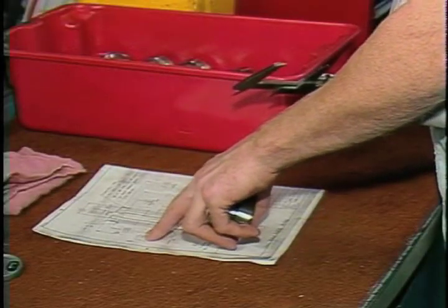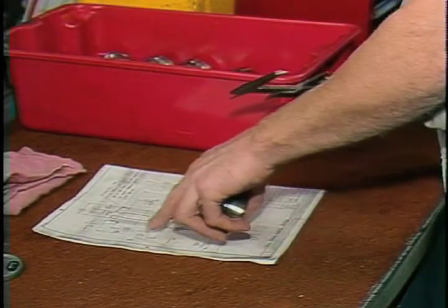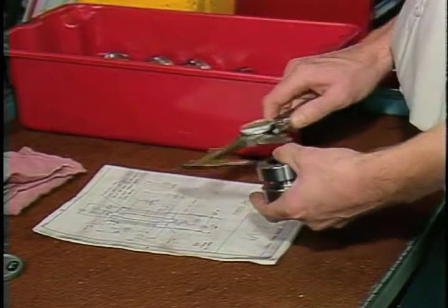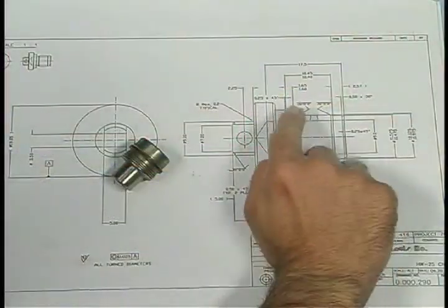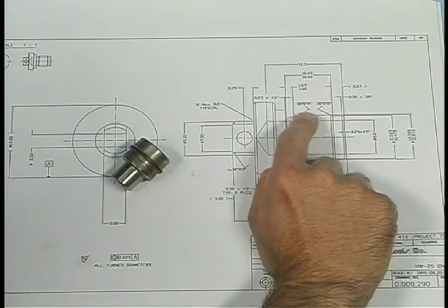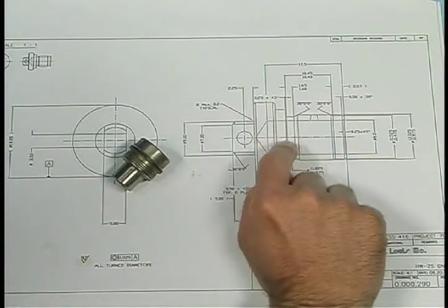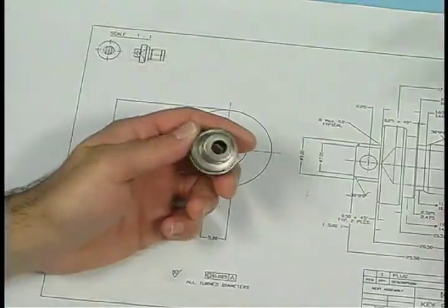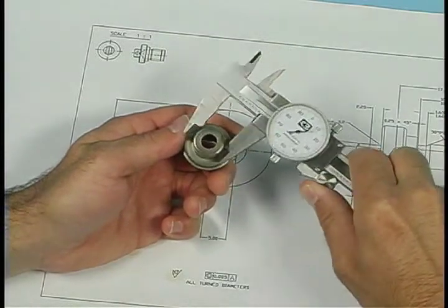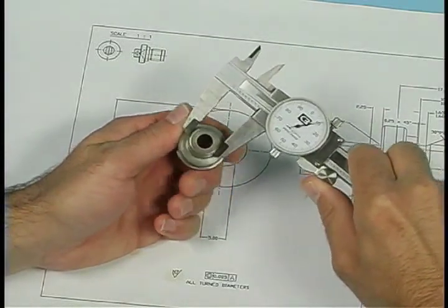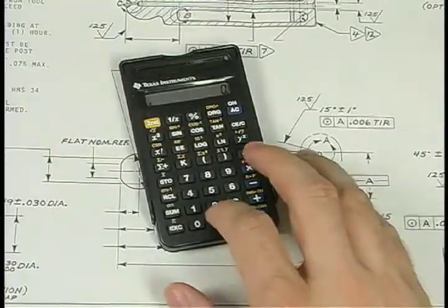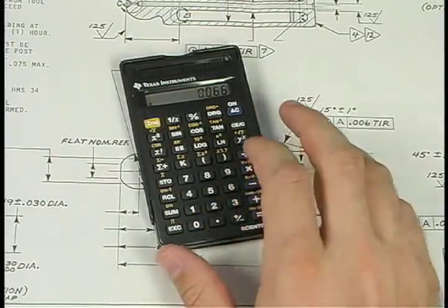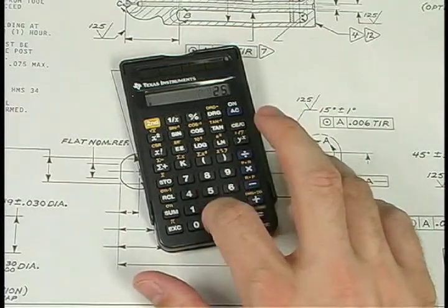Learning to measure accurately isn't just one task, it's many tasks. Measurement is a chain of events that can't afford any weak links. The machinist must first read the print to locate the feature and find the tolerance, select the correct measuring instrument, use the instrument correctly, read it accurately, and perform calculations to determine any adjustment amount.